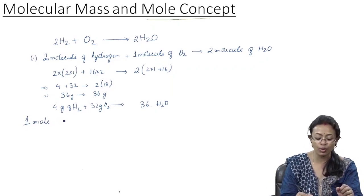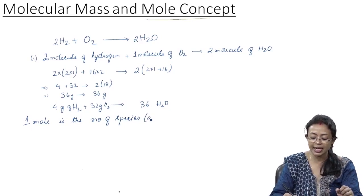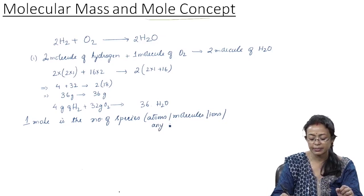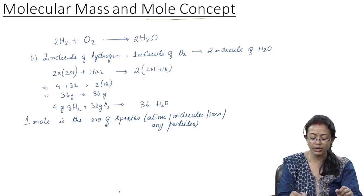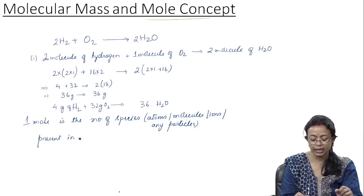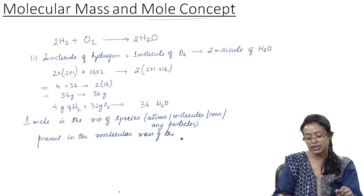One mole is the number of species of a substance. That species can be atoms, it can be molecules, it can be ions, or it can be any particles. So one mole is the number of species present in the molecular mass of the substance.